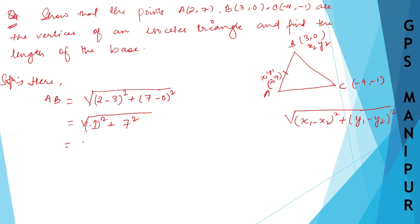Minus 1 square is 1 plus 7 is 49. 49 plus 1 is 50. So root over 50. We got AB as root over 50.